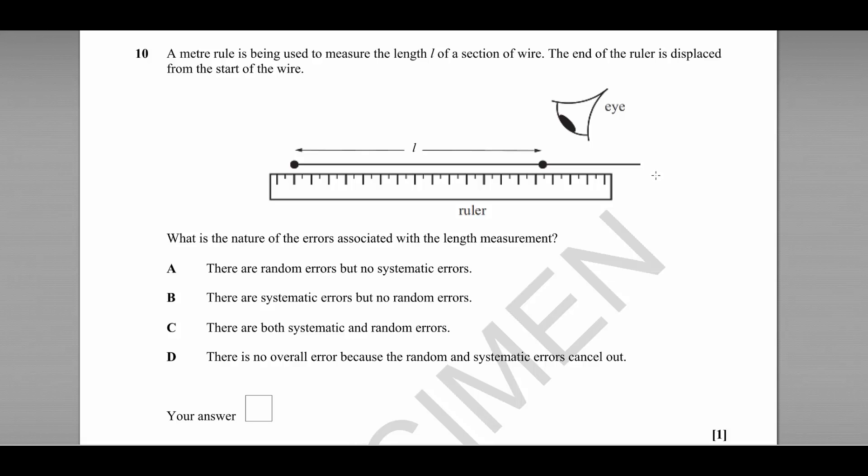A random error is an error usually caused by the inherent uncertainty in a measurement device, in this case a ruler,